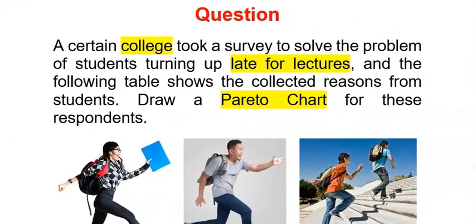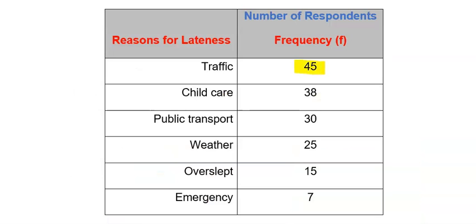Let's start by considering this question. A certain college took a survey to solve the problem of students turning up late for lectures, and the following table shows the collected reasons from students. Draw a Pareto chart for these respondents. From this table, 45 students said they turned up late due to traffic, 38 were due to child care, 30 was due to public transport, 25 were due to weather, 15 overslept, and 7 were due to emergency.